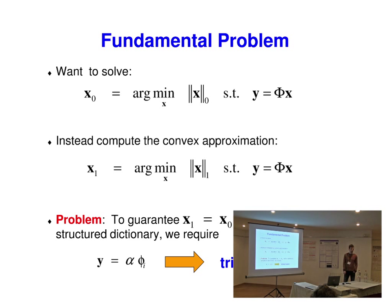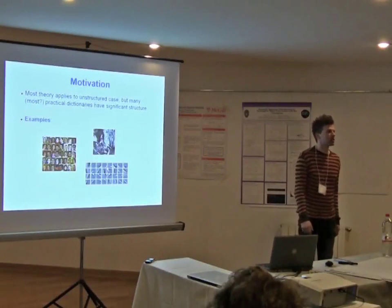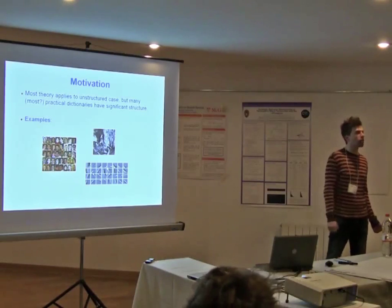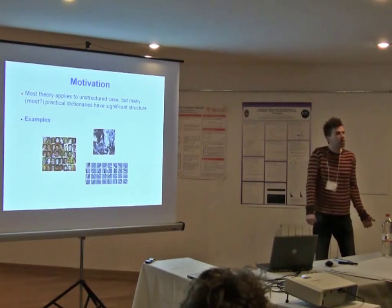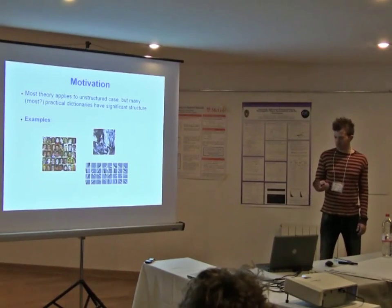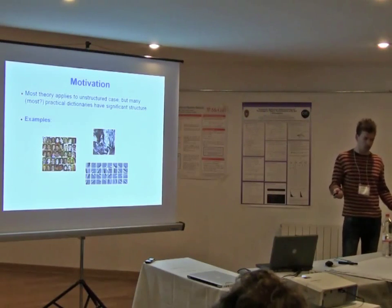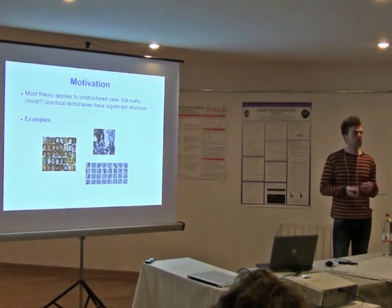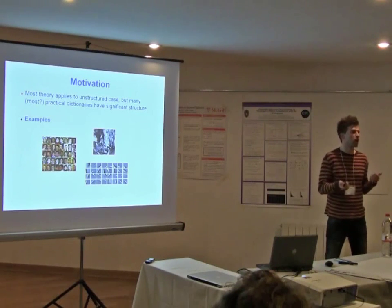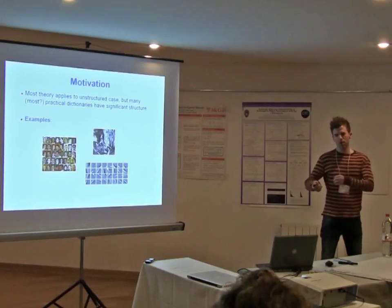This is symptomatic of a bigger problem. If you want to find the maximally sparse solution x0, you replace it with something tractable — an L1 minimization problem. To guarantee that x1 equals x0 with arbitrarily structured dictionaries, the only way that can be true is if the signal you're observing is proportional to one of the dictionary columns, which is a trivial case. The motivation is that most theory essentially applies to the unstructured case, but many — maybe even most — dictionaries have some structure. People have been doing face recognition where the basis vectors are stacked images, or image patches for classification forming dictionaries with highly correlated basis functions. There are many examples where dictionaries have a lot of structure, possibly unknown structure, but the theory only applies to the unstructured case.